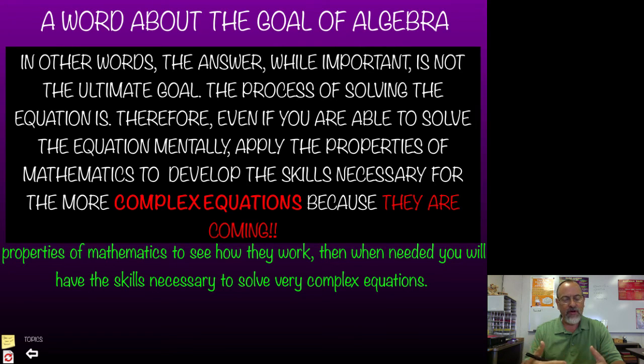Therefore, even if you're able to solve the equation mentally, that's a good thing to do because now you know what the answer should be. But now go back and apply the properties of math and see if you can't mathematically arrive at the answer that you already know, the answer to what you already know it is. I don't know if that made any sense. See if you can't by mathematical properties get the answer that you already figured out with your head.